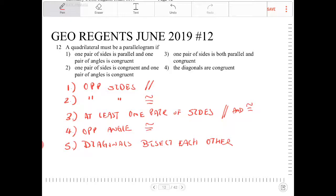Let's see the answer choices. One: one pair of sides is parallel and one pair of angles is congruent. That doesn't really match any of these. Number two: one pair of sides is congruent and one pair of angles is congruent. No. Number three: one pair of sides is both parallel and congruent. That works.